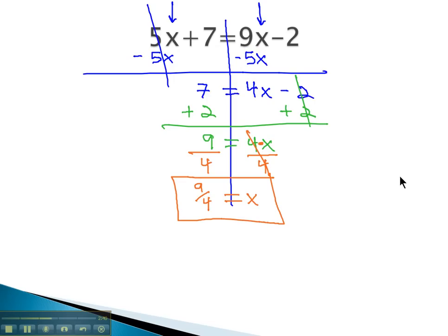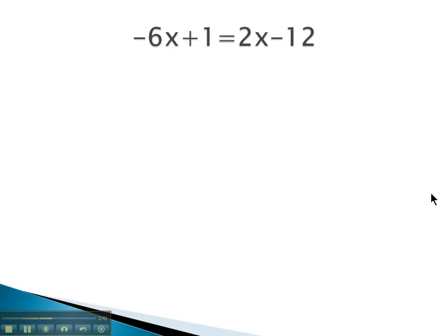Let's try another example, which has the variable on both sides. Again, we'll have to start by getting the variable on one side.